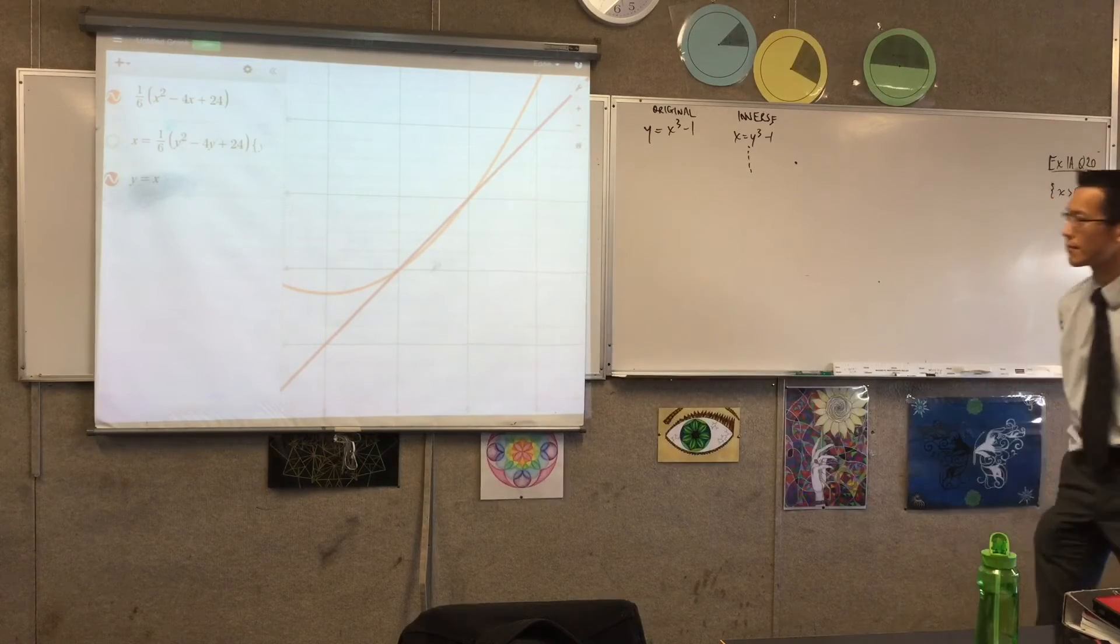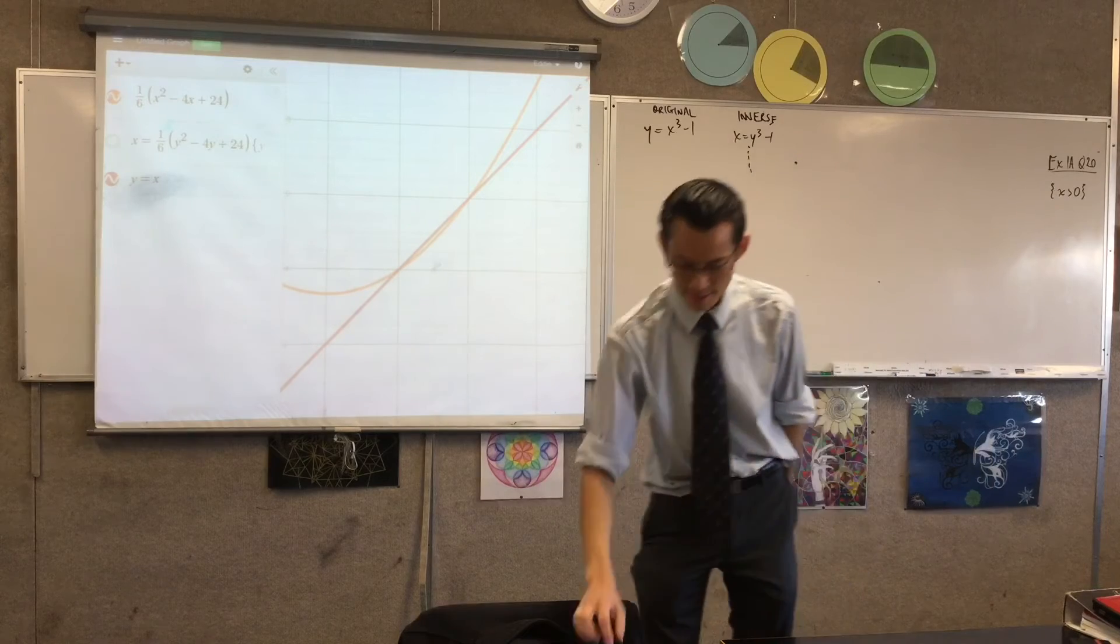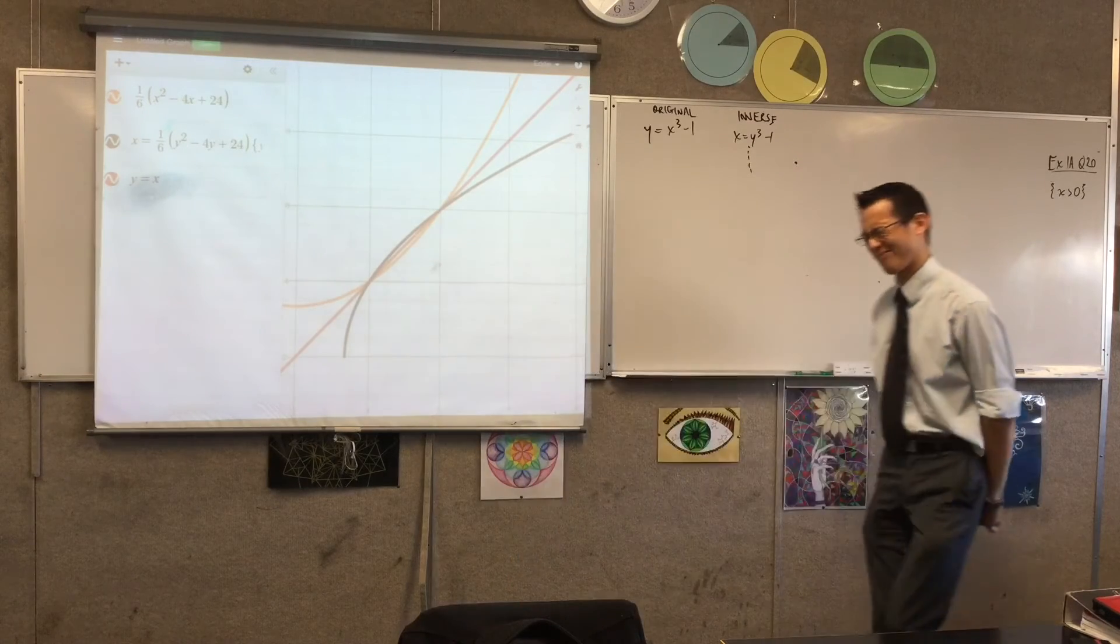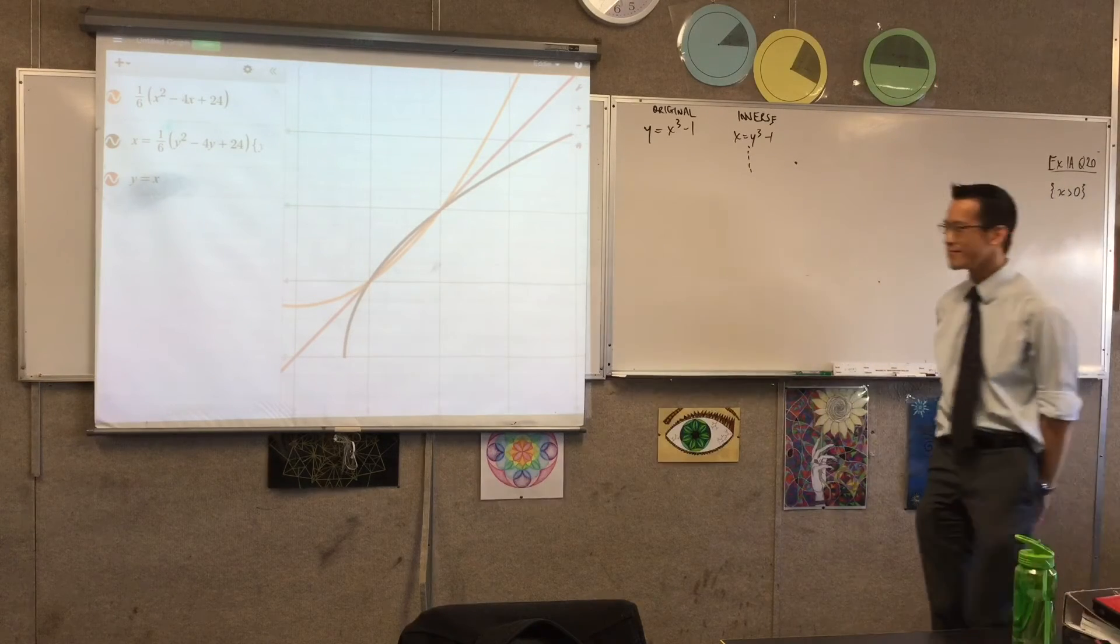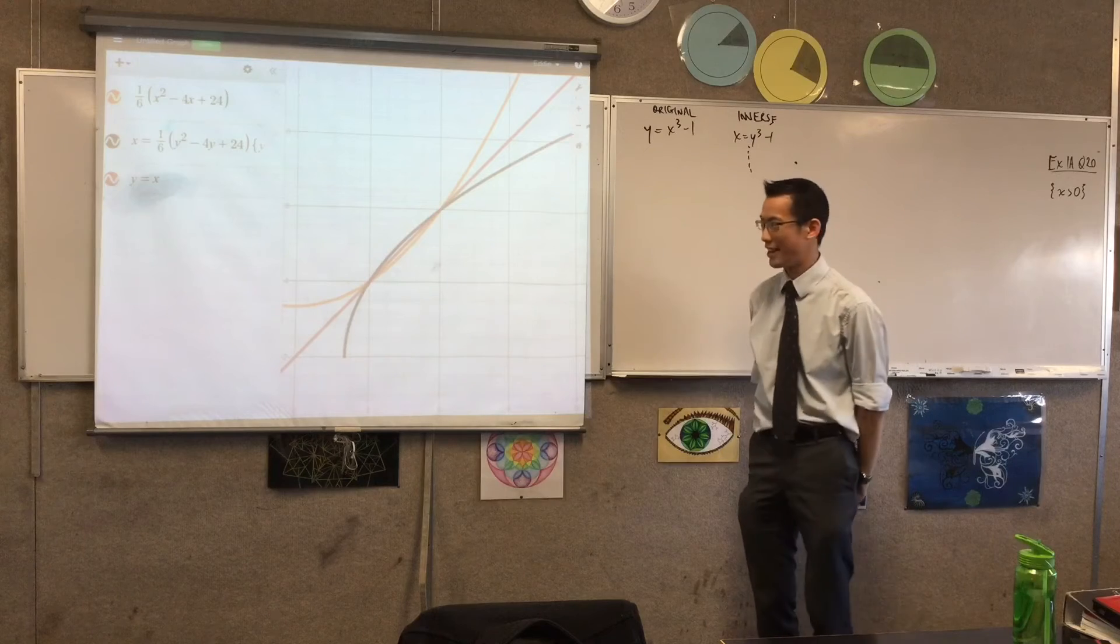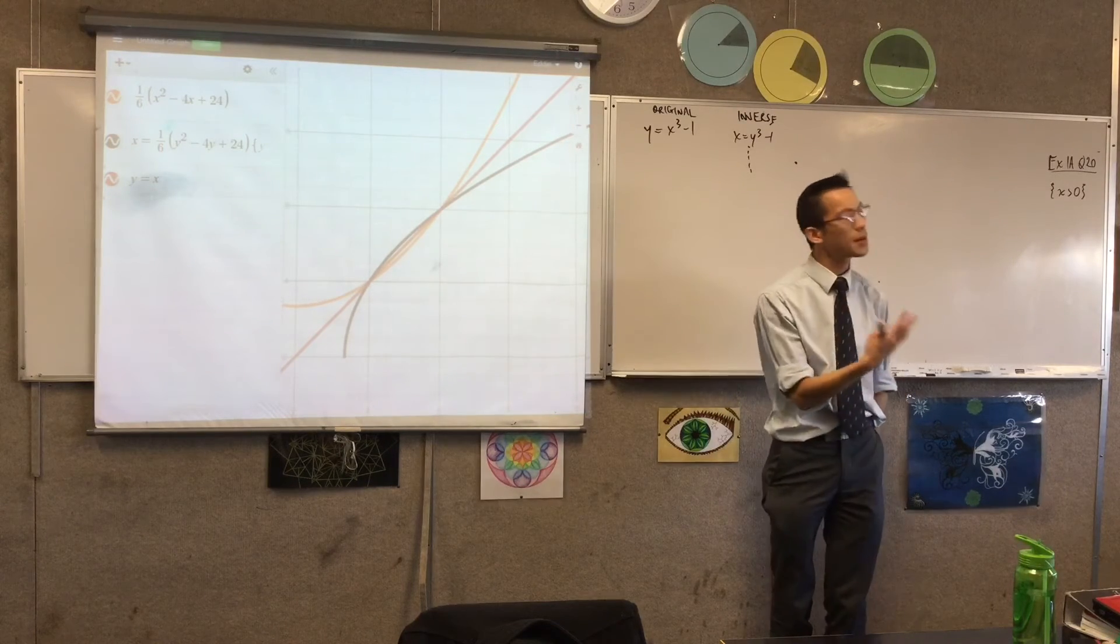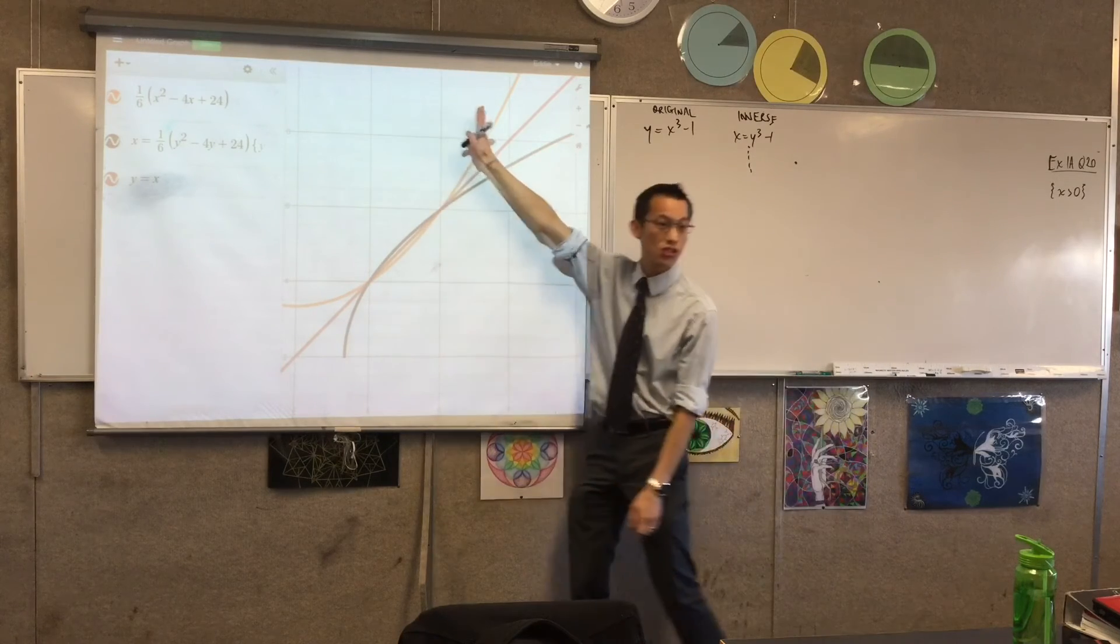So, is that always the rule? Which rule? That the inverse and the original will only ever intersect on the Y equals X line, so that's all we can solve for? Because that's the thing I got caught on. Yeah. Because I tried to inverse, and it was all ugly. Okay. So, the short answer is yes, and I want you to think about geometrically why.